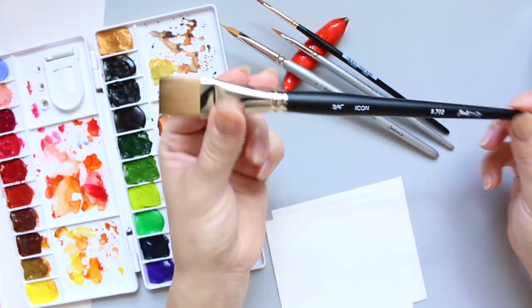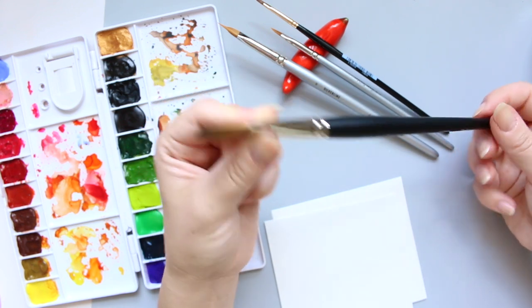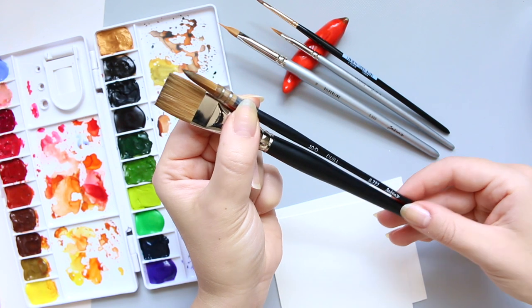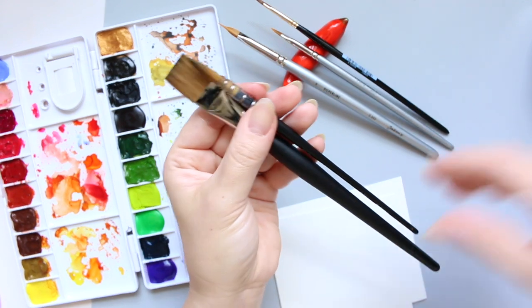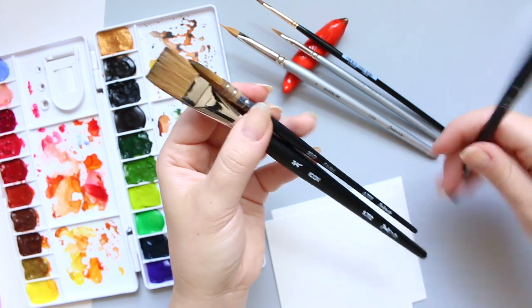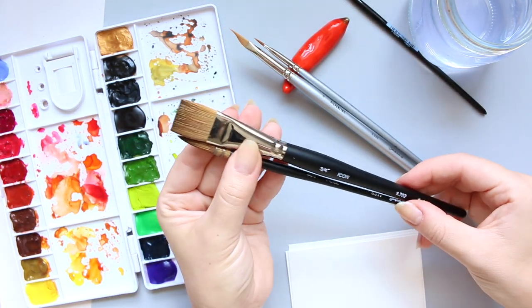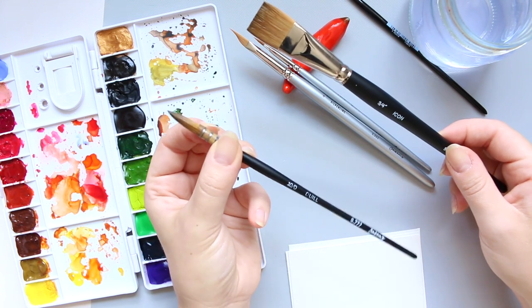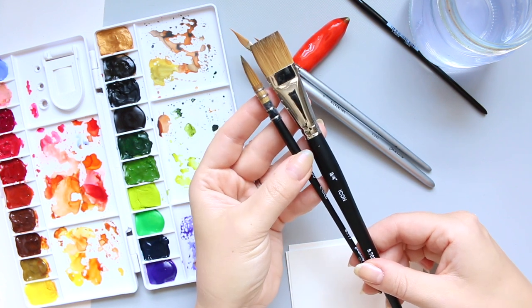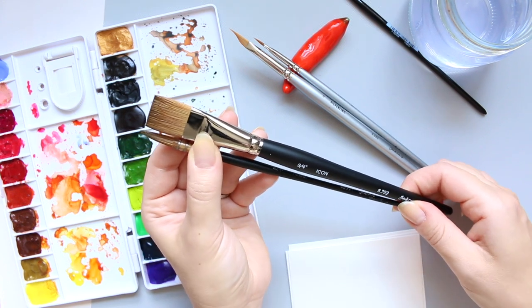So first of all, we're going to look at this one, which I already mentioned to you. This is the Icon brush and the bristles remind me very much of the quill brushes from Jackson's. And I haven't, I mean, I can't see, it doesn't say Icon brush on their quill brushes.